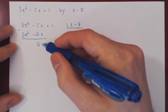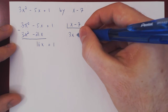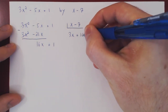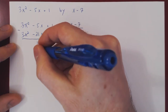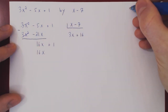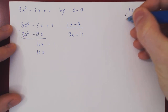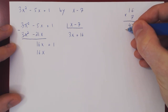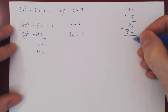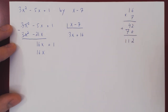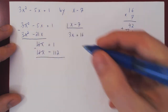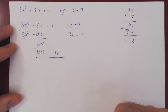We repeat. The degree here is 1 and the degree of the divisor is 1, so there's one more step. What times x is 16x? Simply plus 16. Multiply out by 16 — we get 16x minus 112 (since 7 times 16: 6 times 7 is 42, 7 times 10 is 70, so 112). We subtract: these two cancel. And 1 minus negative 112 gives 113.